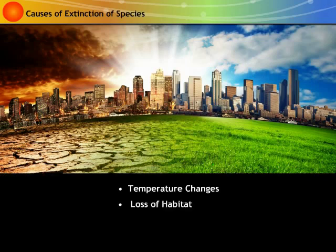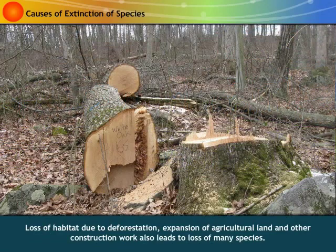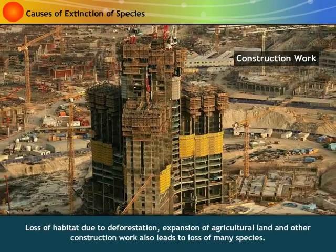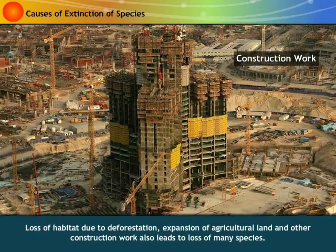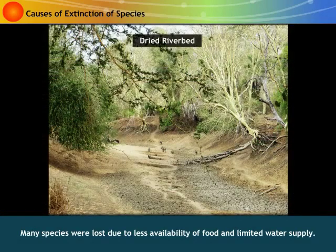Temperature changes, loss of habitat and environmental pollution are the main reasons of disturbances in the environmental equilibrium. Loss of habitat due to deforestation, expansion of agricultural land and other construction work also leads to loss of many species. Many species were lost due to less availability of food and limited water supply.